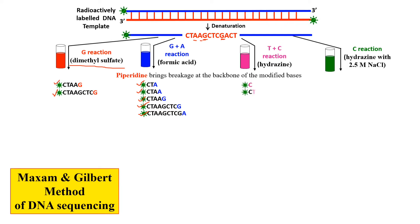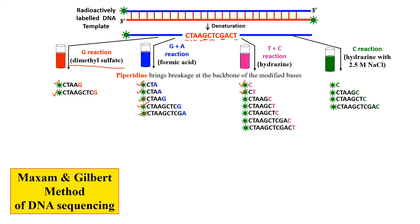In the third test tube with hydrazine, thymine and cytosine are modified. Wherever cytosine or thymine appears in the template, we get fragments: the first cytosine gives a one-base-pair fragment, and the next position (thymine) gives a two-base-pair fragment CT. In the fourth test tube with hydrazine plus sodium chloride, only cytosine is modified. Wherever C appears in the template, we get a corresponding fragment. This way we get all fragments according to the modified bases.